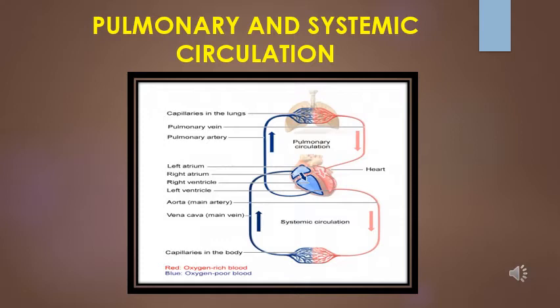The second is systemic or body circulation. In this process, the right auricle receives deoxygenated blood from the different parts of the body and the left ventricle sends oxygenated blood through aorta to different parts of the body.